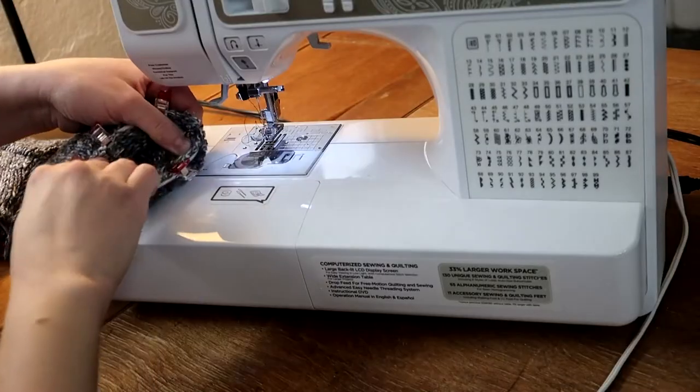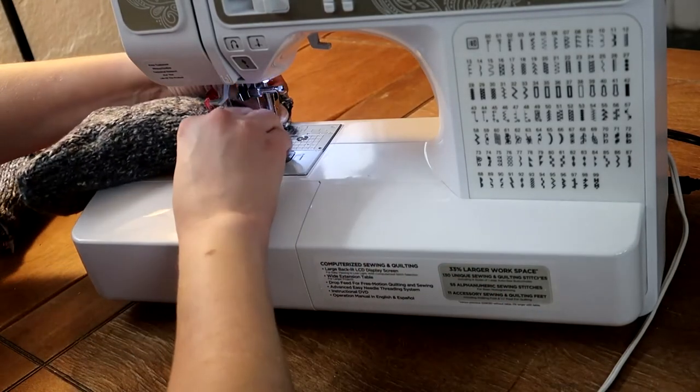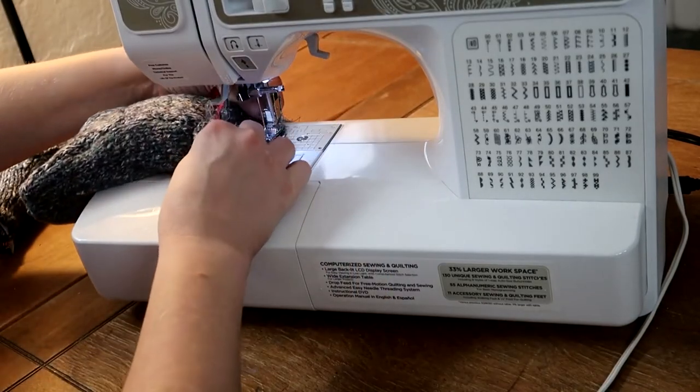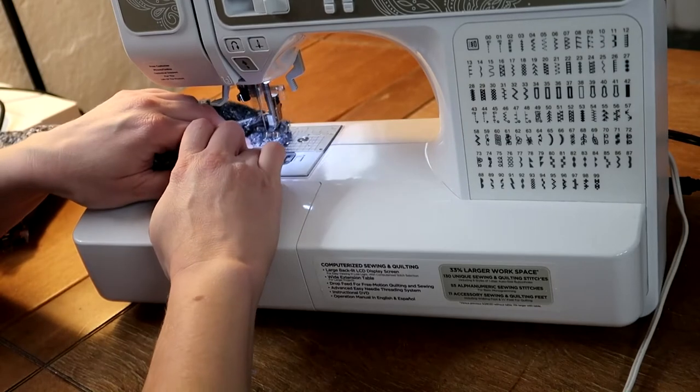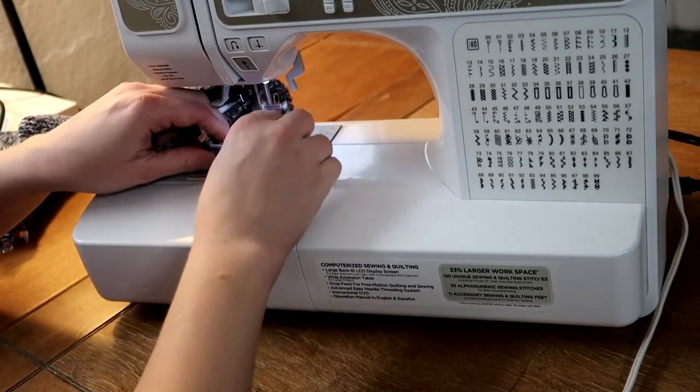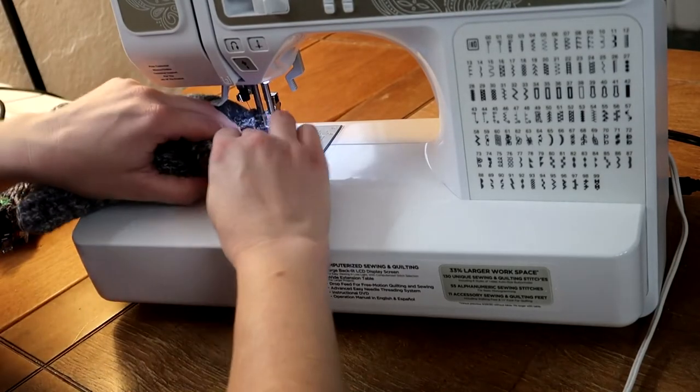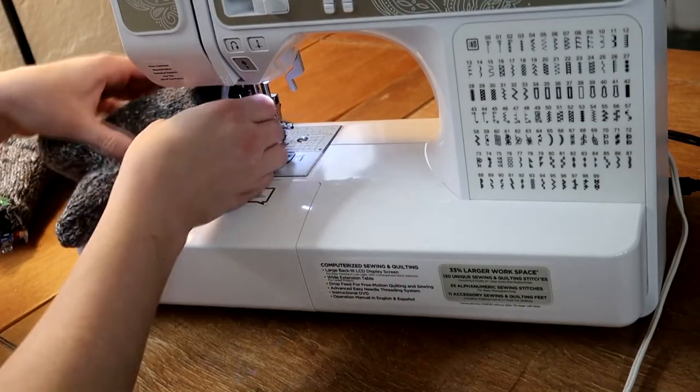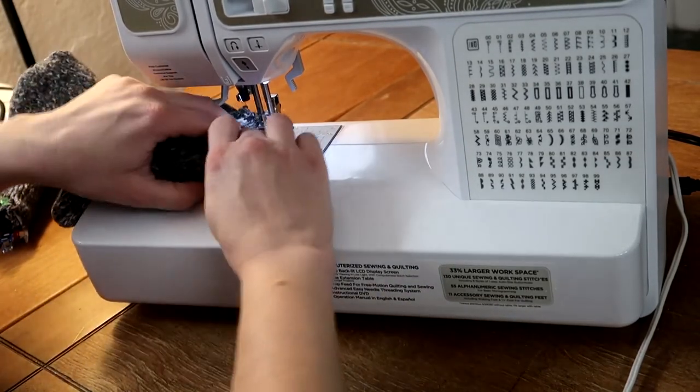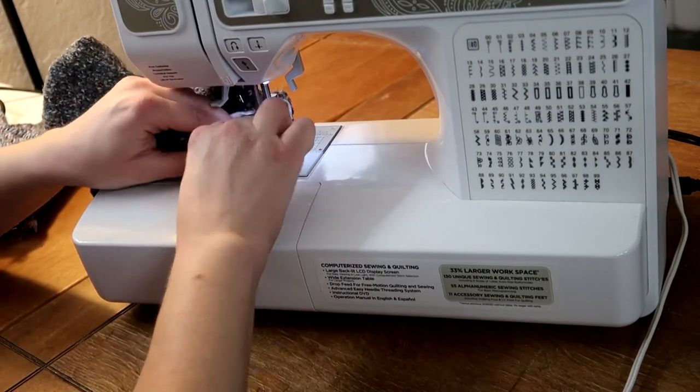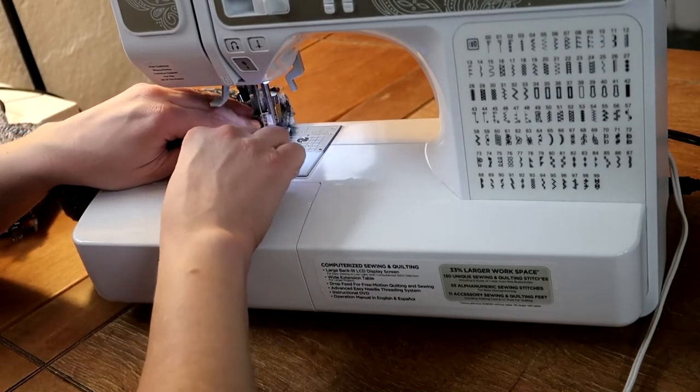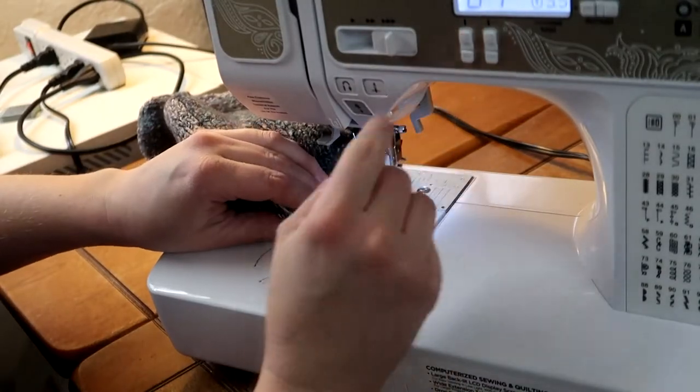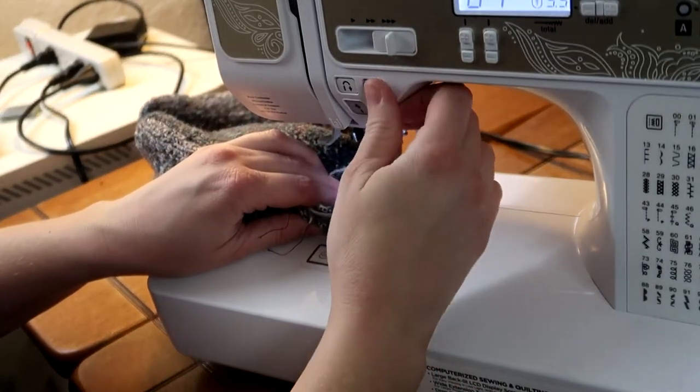Pin everything in place and sew it all together with a quarter inch seam allowance. This is the trickiest part because it's so small and it's pretty thick. Just keep smoothing out the fabric as you're sewing along. I had a slight heart attack with this step.